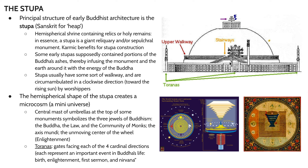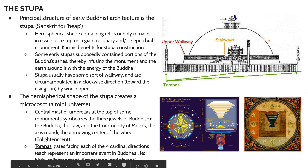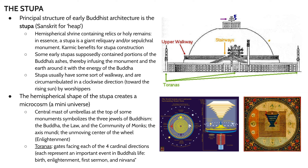There are also four toranas, or gates, that flank the exterior of some stupas. These gates face each of the four cardinal directions, and each direction represents one of the earthly realms in Buddhist cosmology. There are also connections to four important events in Buddha's life: his birth, his enlightenment, the first sermon, and his achievement of nirvana.